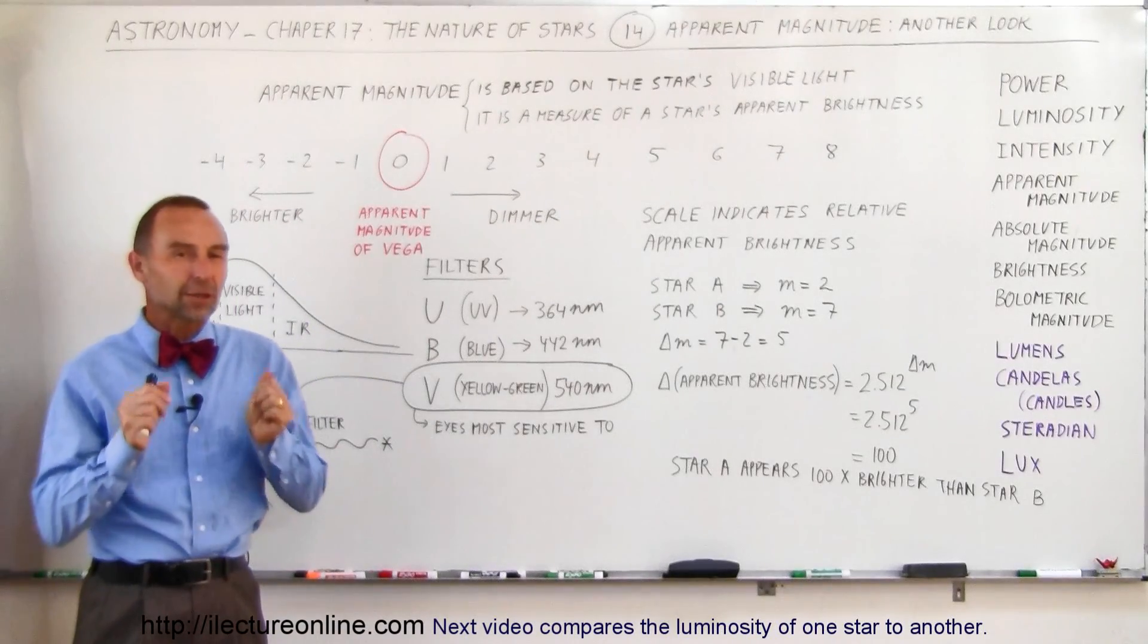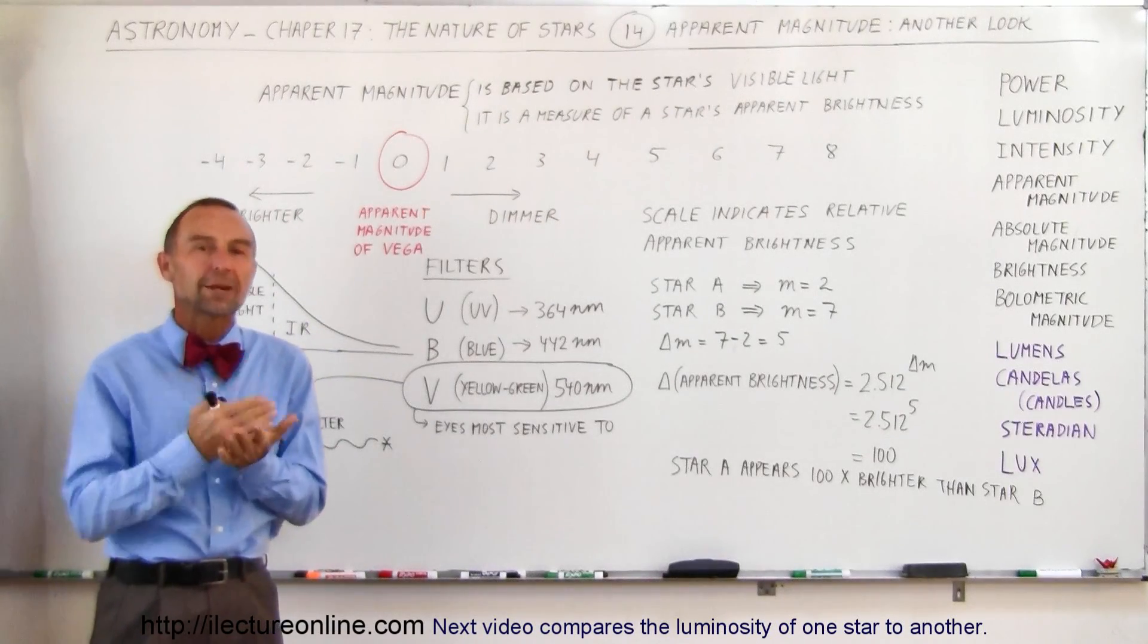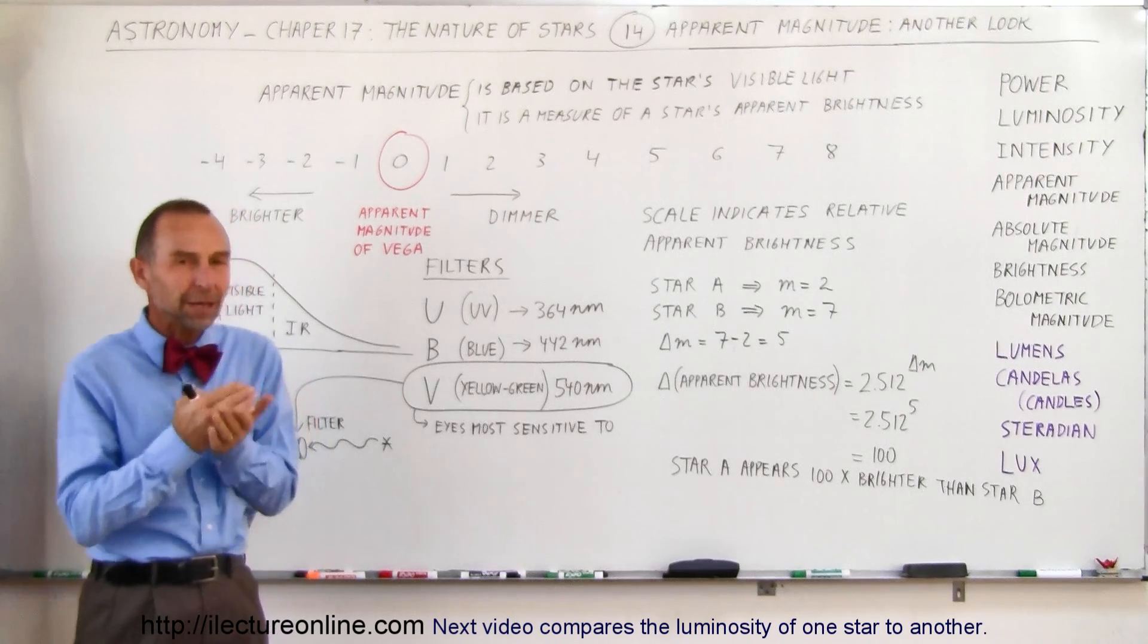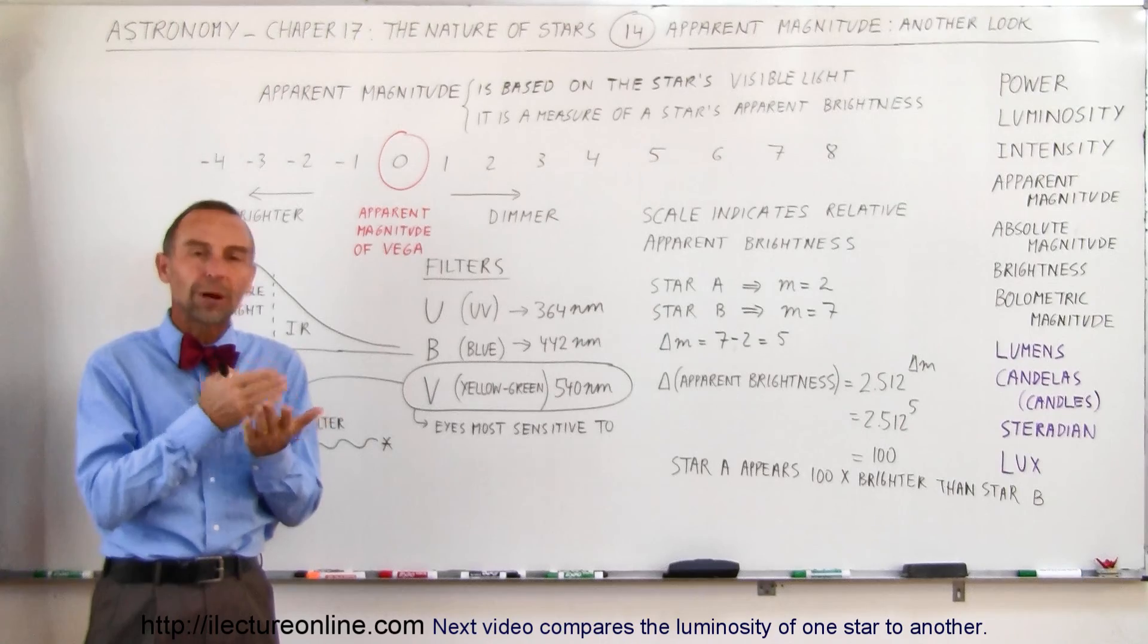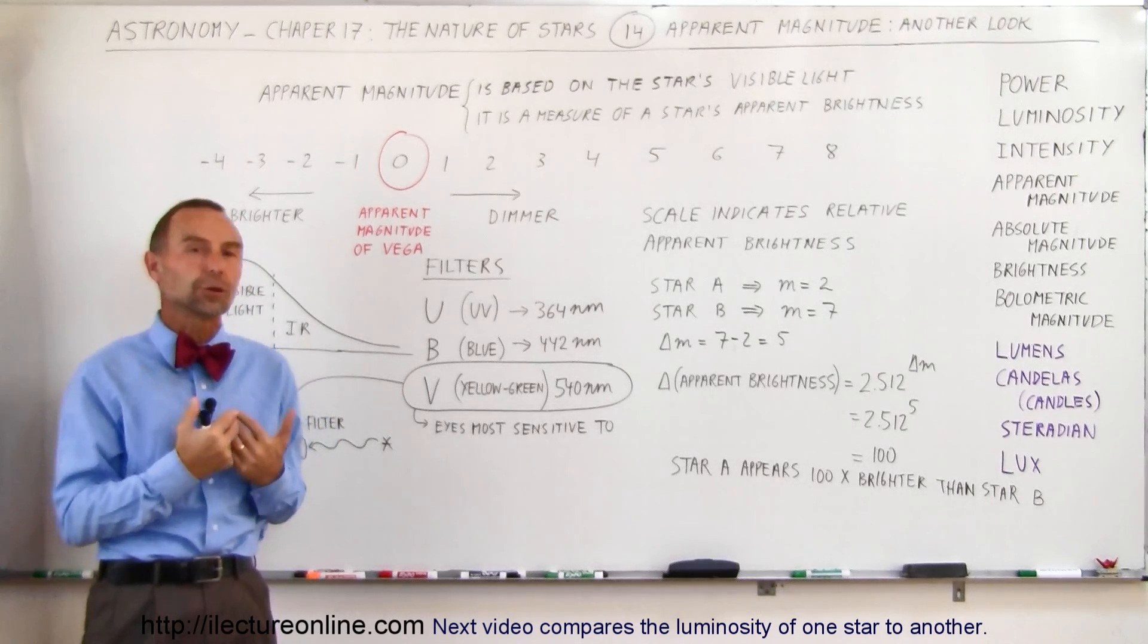Welcome to Electron Online. Now we're going to take a closer look at what we mean with apparent magnitude. Apparent magnitude is a scale used in astronomy to determine the brightness that stars appear to be from our vantage point on the Earth.